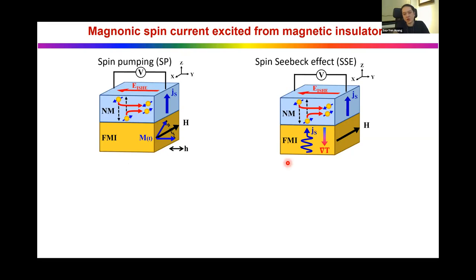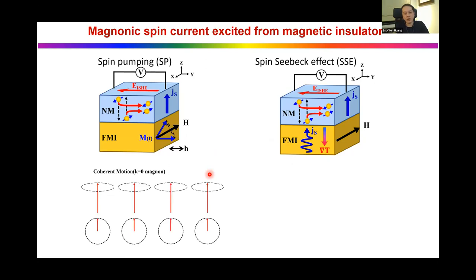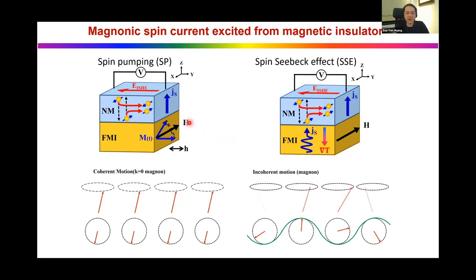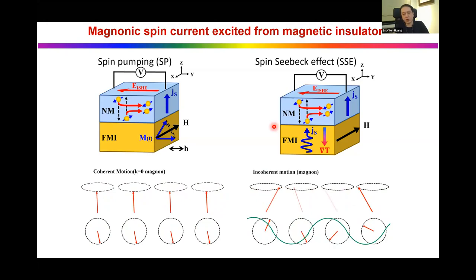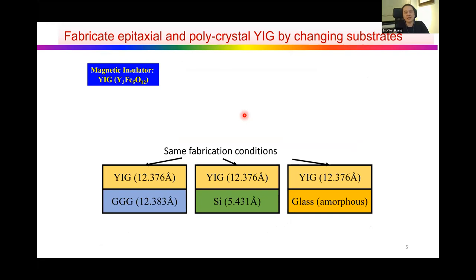If the spin current source is a ferromagnet insulator, since electron current cannot move freely, spin pumping and the spin Seebeck effect are the most important and well-established methods to generate pure spin current. Spin pumping uses resonant microwave and spin Seebeck uses thermal energy. Theory suggests spin pumping arises from coherent motion at FMR corresponding to the k=0 magnon mode, while spin Seebeck runs from non-coherent thermal motion. Although spin Seebeck and spin pumping have been widely studied and considered to share a similar mechanism, we show there is a significant difference between them when one performs detailed measurements.